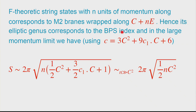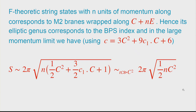These string states with n units of momentum correspond in the M-theory dual to M2-branes wrapped around cycle C together with n times the elliptic fiber class. If you compute the central charge of the corresponding string, it depends on the self-intersection of the cycle and C·c1, the first Chern class of the base. For large enough momentum n, you can compute the degeneracy and get a formula for the black hole entropy that agrees with the expected BPS result in the large-n limit.